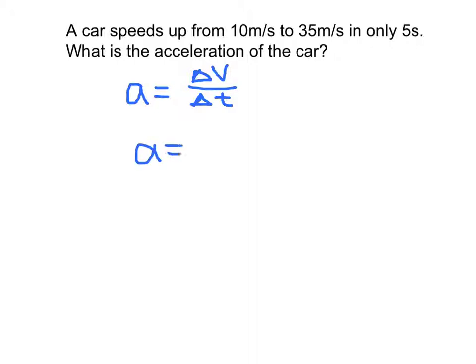So what do we know? Well, we know that the car speeds up from 10 meters per second to 35 meters per second. So what does that tell us about the change in velocity? Well, it went from 10 to 35, so that's an increase of 25 meters per second. So that means our delta V, our change in velocity, is 25 meters for every second.